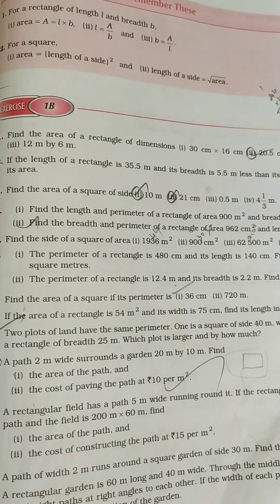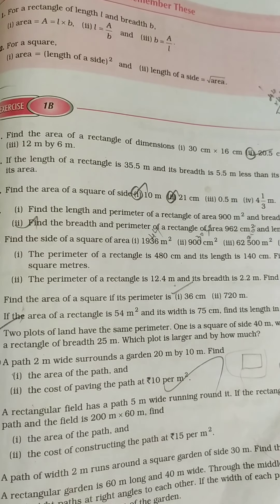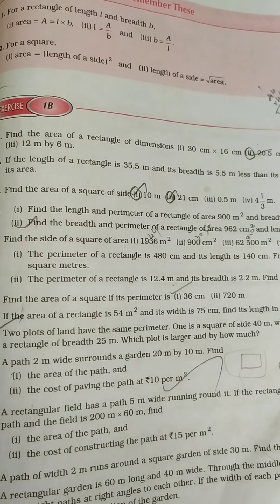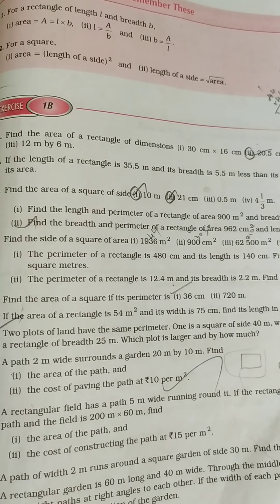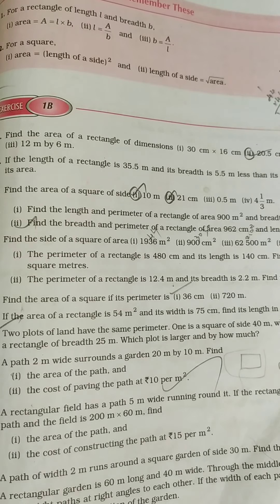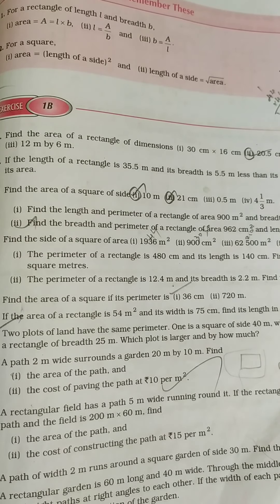To find the area of a rectangle you know the formula is length into breadth. So to substitute in the formula first we have to find the length. Using the perimeter formula first we will find the length. Then we will be substituting it in the area of a rectangle.